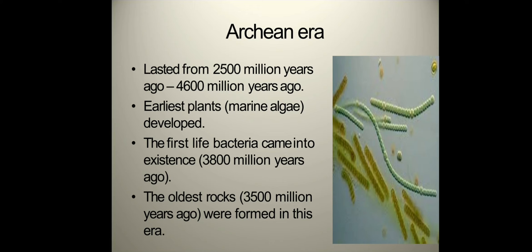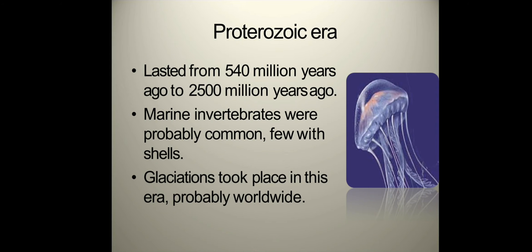The Archean era lasted from 2,500 million years ago to 4,600 million years ago. The earliest plants to develop were marine algae. The first life — bacteria — came into existence from 3,800 million years ago. The oldest structs were formed in this era. The Proterozoic era lasted from 540 million years ago to 2,500 million years ago. Marine invertebrates were probably common in this era, some with few shells. Glaciations took place in this era, probably worldwide.